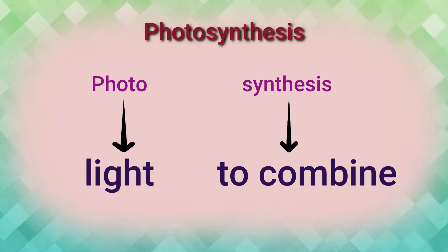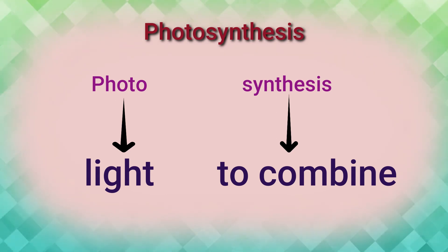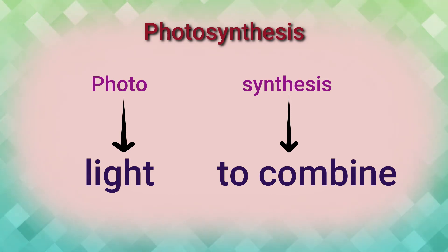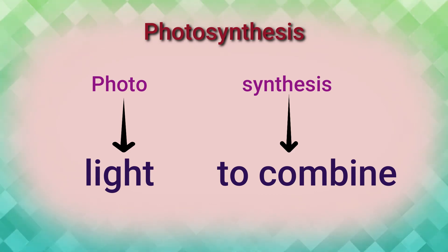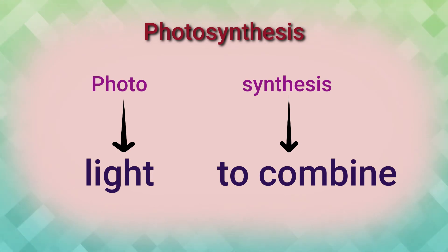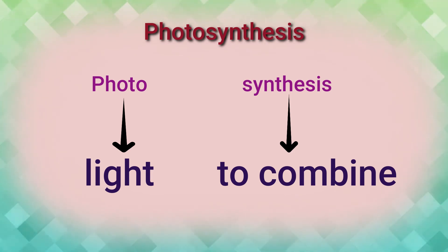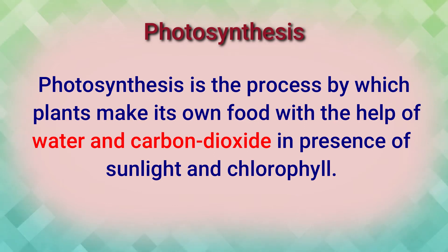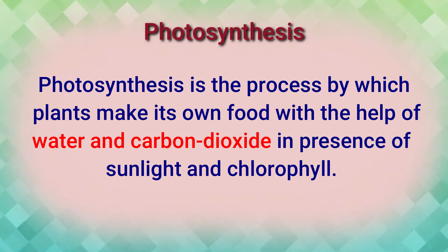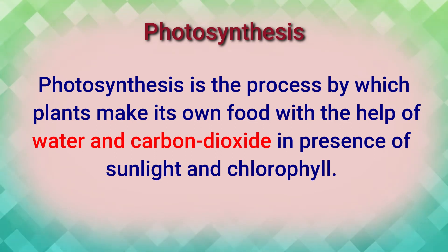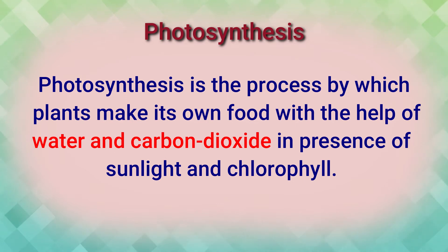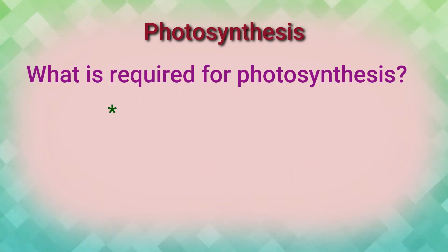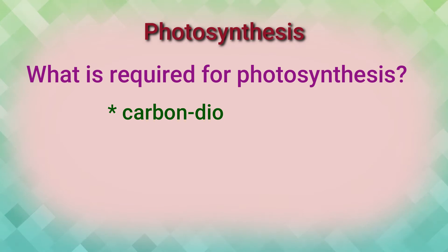Photosynthesis is made up of two words: photo and synthesis. Photo means light, and synthesis means to combine or to make. The definition of photosynthesis: photosynthesis is the process by which plants make their own food with the help of water and carbon dioxide in the presence of sunlight and chlorophyll.